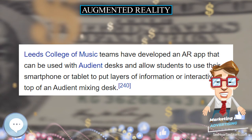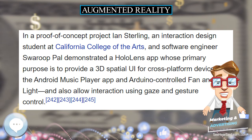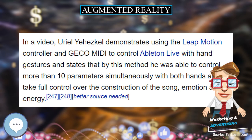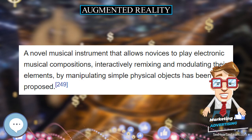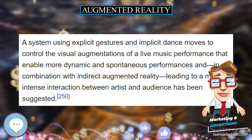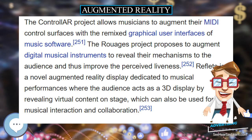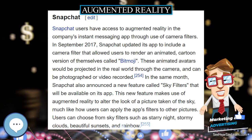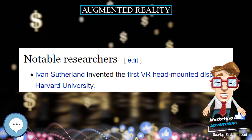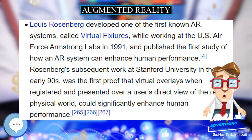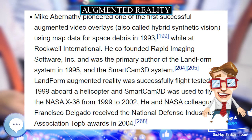A handheld display employs a small display that fits in a user's hand. All handheld AR solutions to date opt for video see-through. Initially, handheld AR employed fiducial markers and later GPS units and MEMS sensors such as digital compasses and 6-degrees-of-freedom accelerometer/gyroscope. Today, simultaneous localization and mapping (SLAM) and markerless trackers such as parallel tracking and mapping are starting to come into use. Handheld displays promise to be the first commercial success for AR technologies. The two main advantages are the portable nature of handheld devices and the ubiquitous nature of camera phones. Disadvantages include the user having to hold the device out in front of them at all times, and the distorting effect of wide-angled mobile phone cameras.